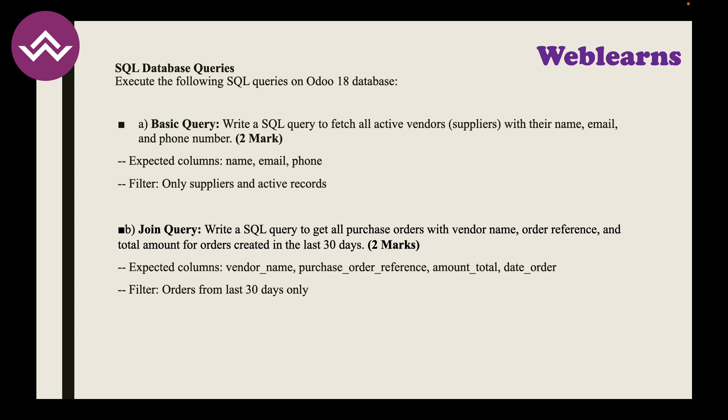SQL Task 1 — Basic Query: Write a SQL query to fetch all active vendors/suppliers with their name, email, and phone number. Filter only suppliers and active records. SQL Task 2 — Join Query: Write a SQL query to get all purchase orders with vendor name, purchase order reference, and total amount for orders created in the last 30 days. Expected columns: vendor_name, purchase_order_reference, amount_total, date_order.